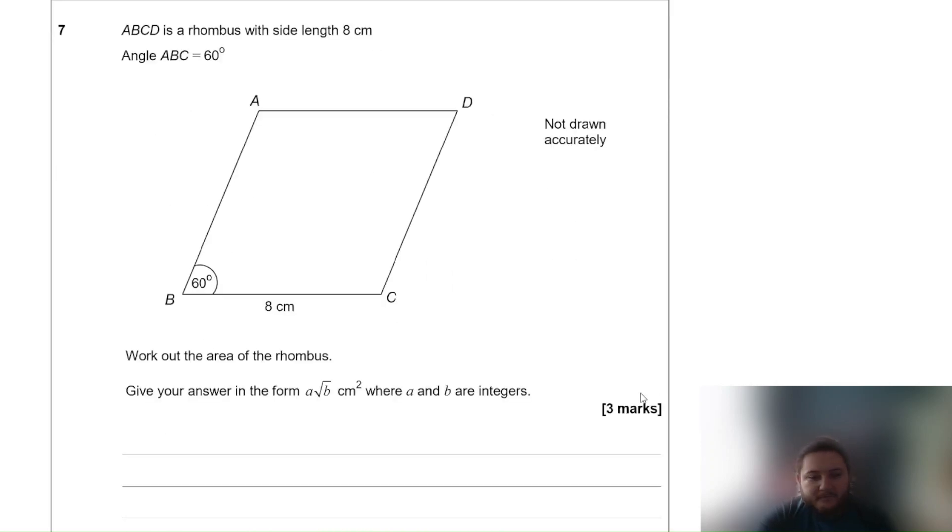Let's have a look then. ABCD is a rhombus with side length 8 centimeters. Angle ABC is equal to 60 degrees. Work out the area of the rhombus. Give your answer in the form A square root of B centimeter square, where A and B are integers. I really like this question because I think it is a very interesting way of using exact trig values. So if this is a rhombus then all the sides are the same. So this is 8 centimeters, this is 8 centimeters, and this is 8 centimeters.